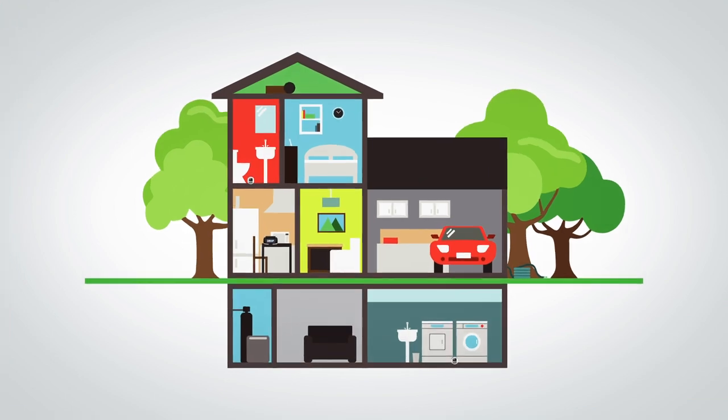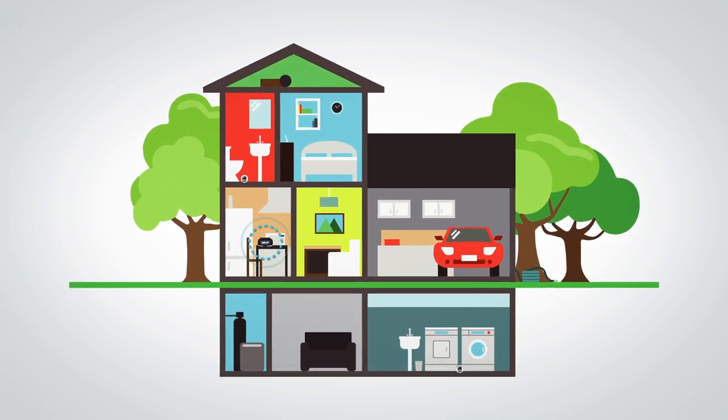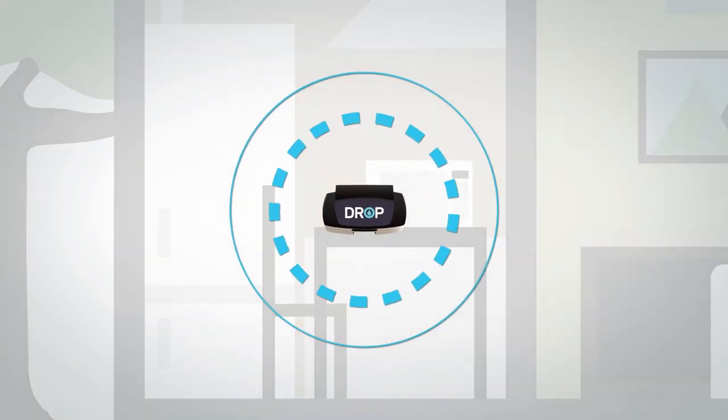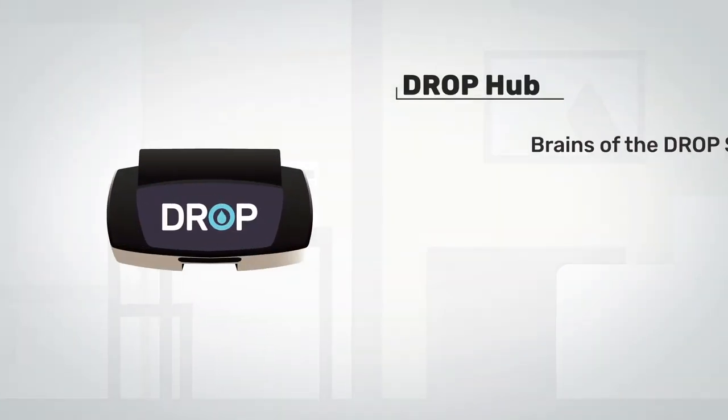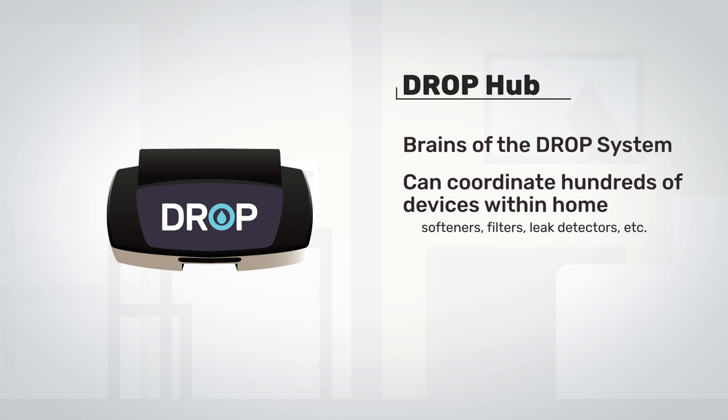When you buy a drop cartridge filter, you're installing a product in your home that's part of an ever-expanding ecosystem of water management products designed to work together in harmony. All drop products are controlled by the drop hub, which is the brains of the system and can coordinate hundreds of devices within the home while also connecting your system to the cloud for remote access.